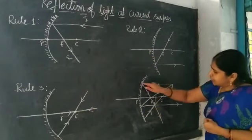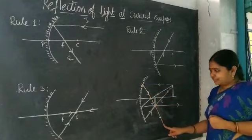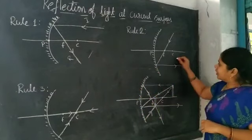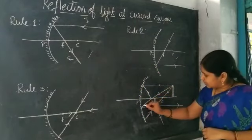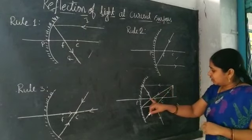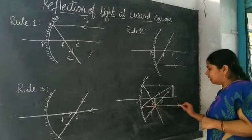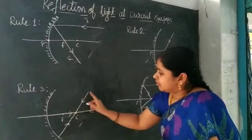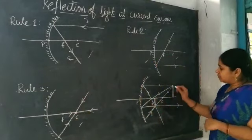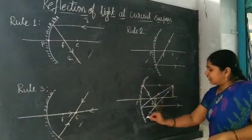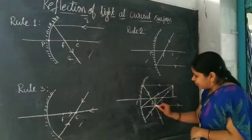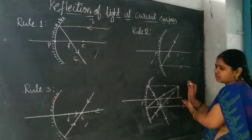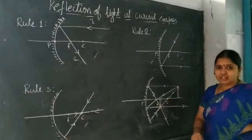The first ray is parallel to the principal axis; after reflection, it passes through the focus — rule 1. The second ray passes through the focus; after reflection, it comes parallel to the principal axis — rule 2. The third ray passes through the center of curvature; it retraces back — rule 3. Where all three rays intersect, there we get the image of the source. This intersection point is very important.